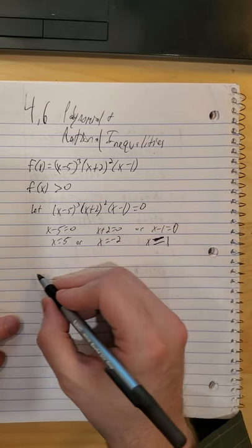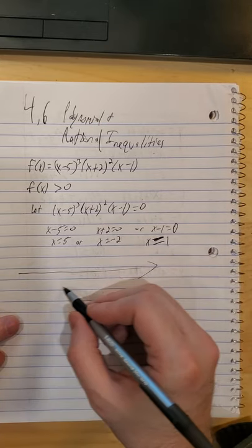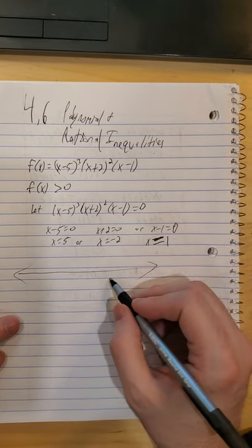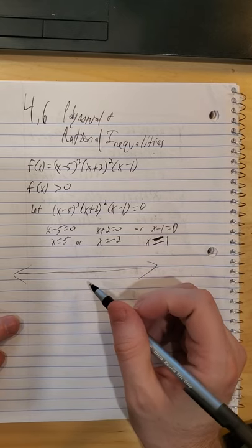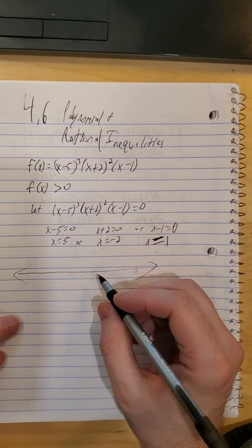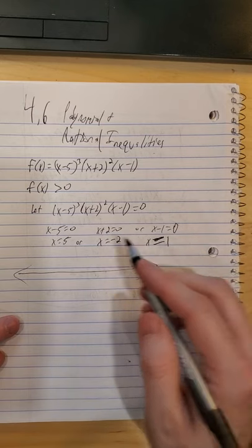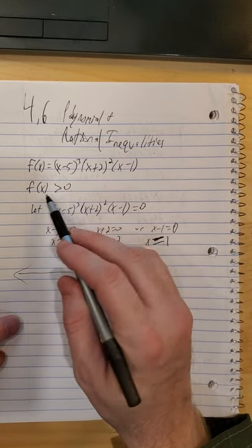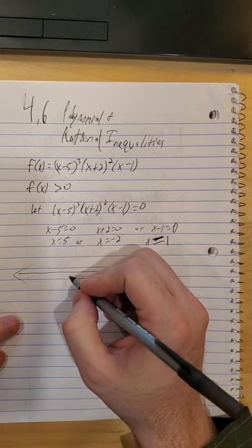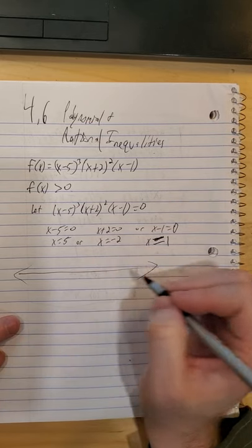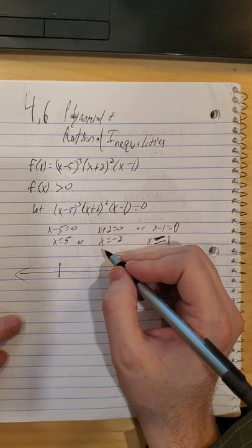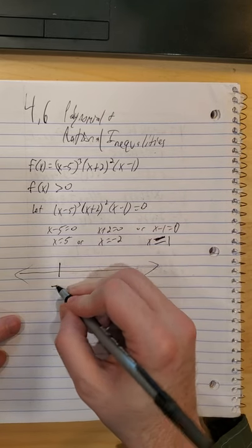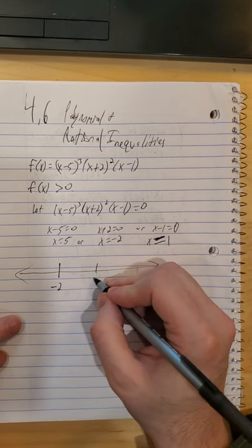So these are all the places where if we drew the two-dimensional graph we would either cross or touch the x-axis. However, if we're just looking at is this above or below 0, we really just need the number line. And this is similar to when we had our quadratic inequalities.